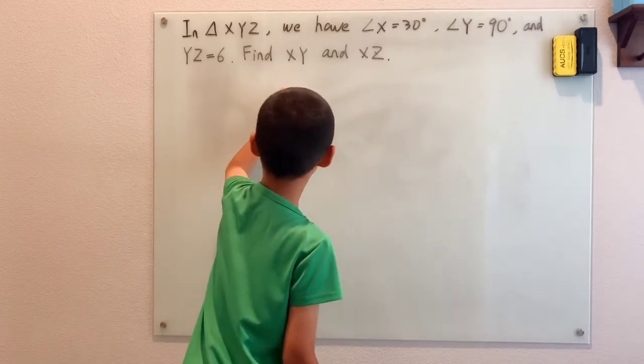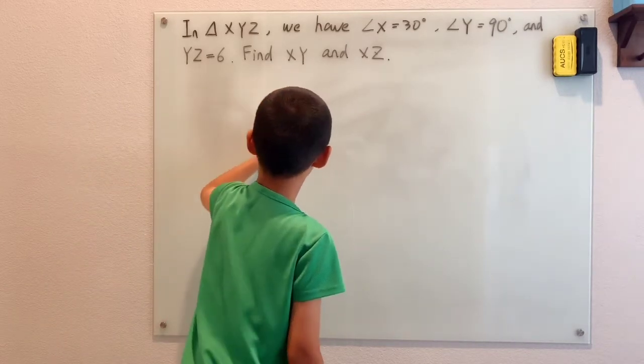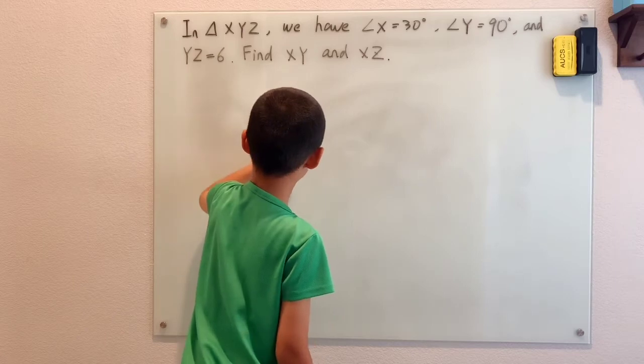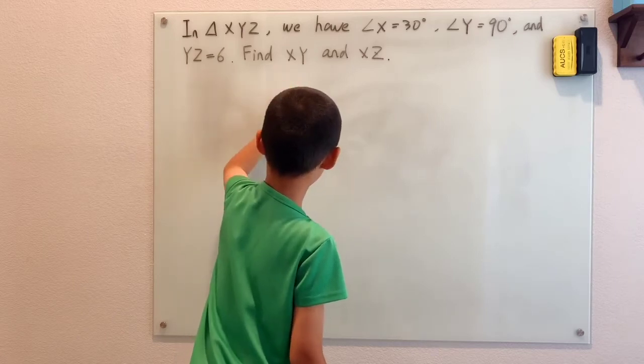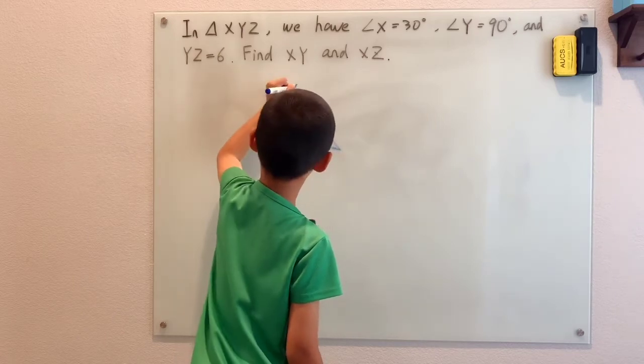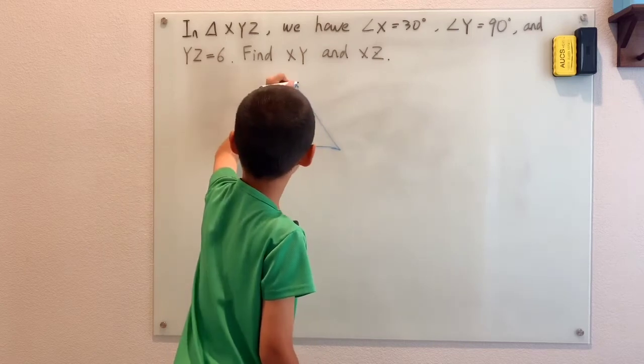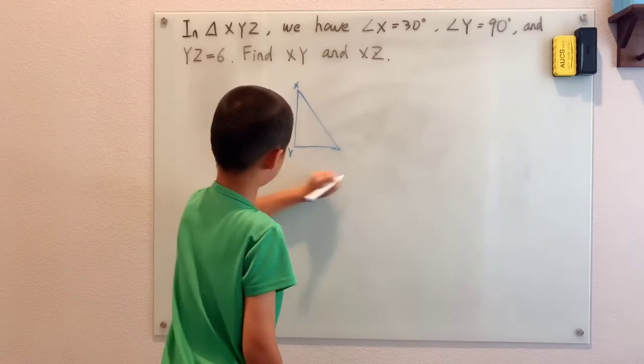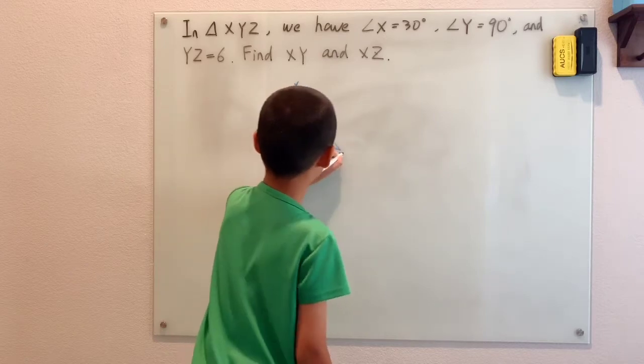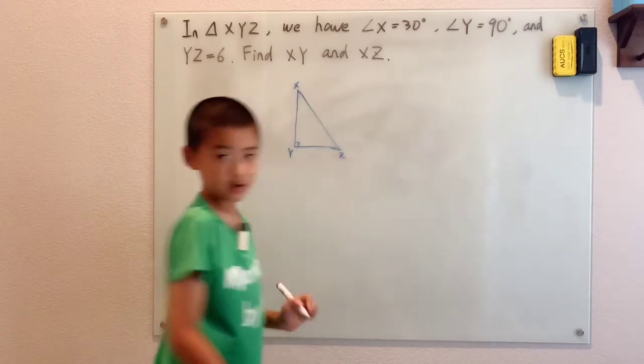So draw a diagram. Basically, after we draw the diagram, X has the 30-degree angle, Y has the 90-degree angle, and then Z's angle.